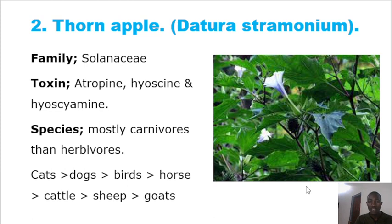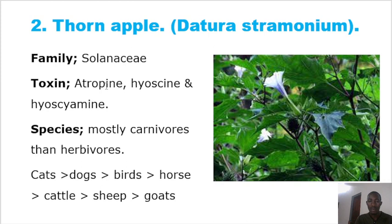The second common toxic plant is thorny apple, called Datura stramonium, in the family Solanaceae. It contains three toxins: atropine, hyoscine, and hyoscyamine — all alkaloids. This thorny apple is in the same family as Atropa belladonna. Toxicity is more pronounced in carnivores than herbivores — cats and dogs are highly affected, while goats and sheep are less susceptible.